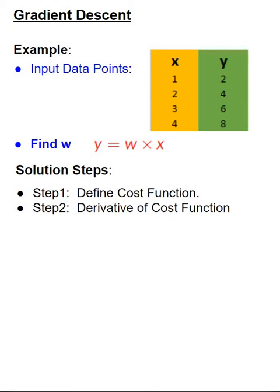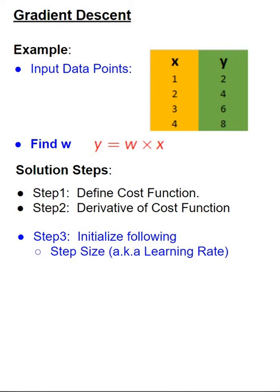The next step is to initialize a few variables. First, we'll initialize the learning rate, which we shall abbreviate as LR. In our example, LR is equal to 0.1, and this will be held constant throughout our algorithm.